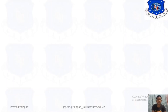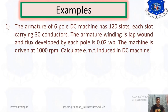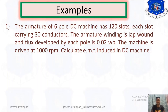Now let us look at an example. The armature of a 6-pole DC machine has 120 slots, each slot carrying 30 conductors. The armature winding is lap wound and the flux developed by each pole is 0.02 Weber. The machine is driven at 1000 rpm. Calculate the EMF induced in the DC winding.